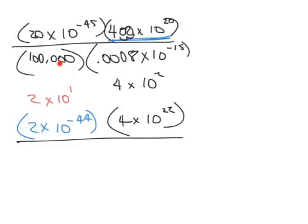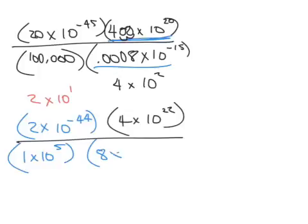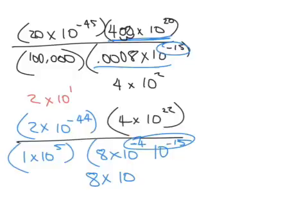Let's work on the 100,000. We're going to write that as 1 times 10, and we move the decimal place 1, 2, 3, 4, 5 — so we moved it over 5 to the left, which is positive. And then we're going to change this one and write it as 8 times 10. We moved it to the right — 1, 2, 3, 4 — so it's negative. And we have the 10 to the negative 15 also. So this actually becomes 8 times 10 to the negative 4, plus negative 15 is negative 19. So let's leave it as 10 to the negative 19.